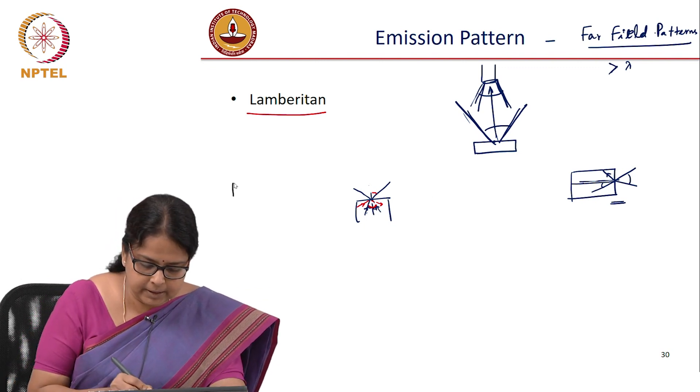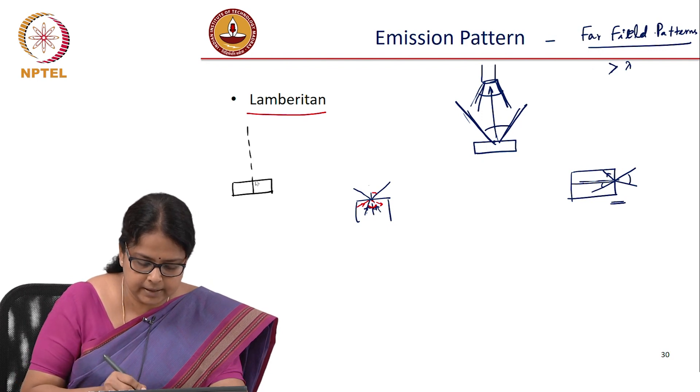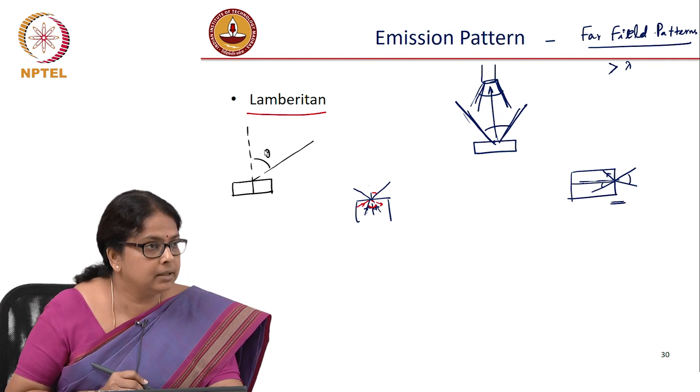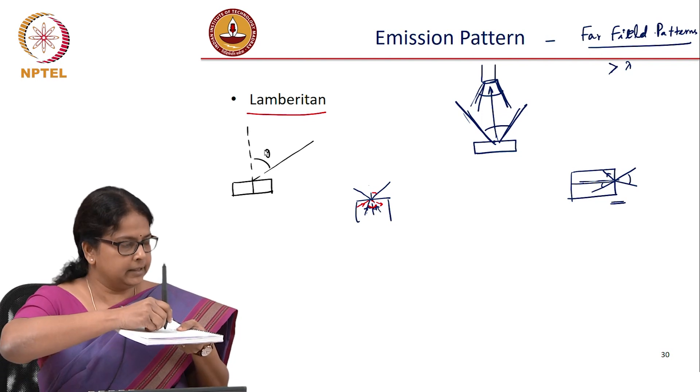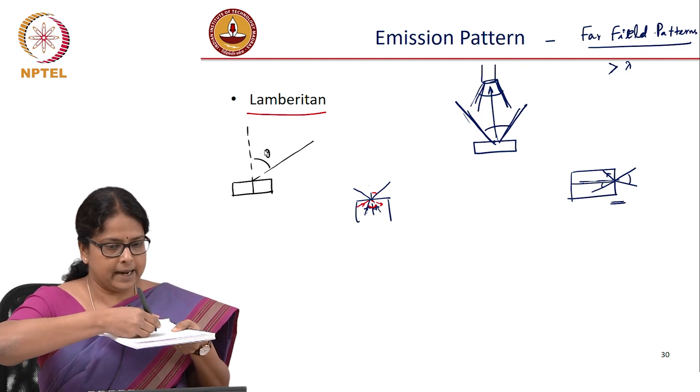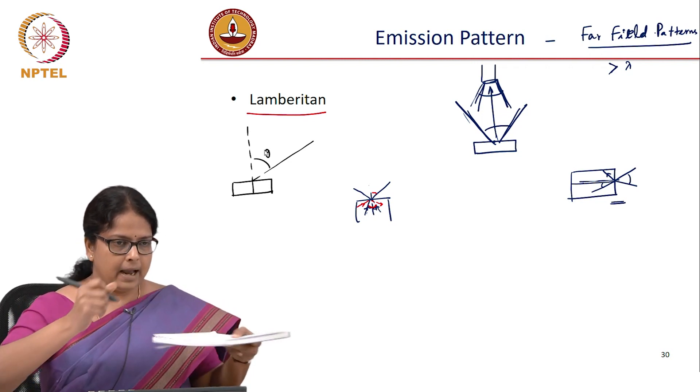let us say this is the emitting surface and this is the normal to the surface and you are looking at an angle theta with respect to the normal. So, let us say I have an emitting surface like this, this is my theta, this is my normal and I am looking at an angle theta anywhere around this normal.